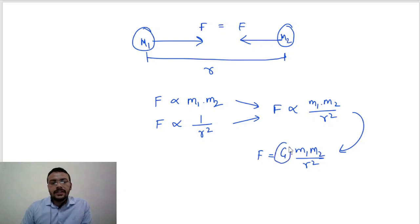Now what is this G? We know that whenever the proportionality sign is removed, then there must come a constant. So this is a constant which is called universal gravitational constant. And since it is a constant, so its value is predefined and it is 6.673 into 10 to the power minus 11.